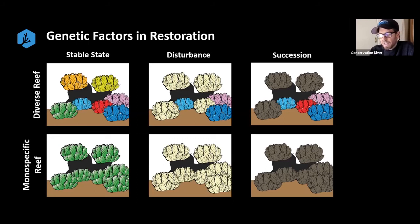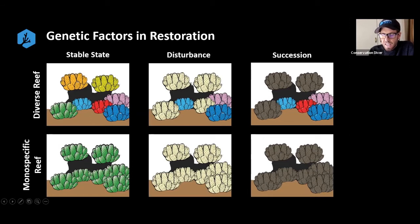And that's the same with corals — we're all the same species but we have different reactions because we have different genetics. So if we have a nice diverse system and we have some disturbance, some corals are going to die and some are going to survive to reproduce both asexually and sexually.